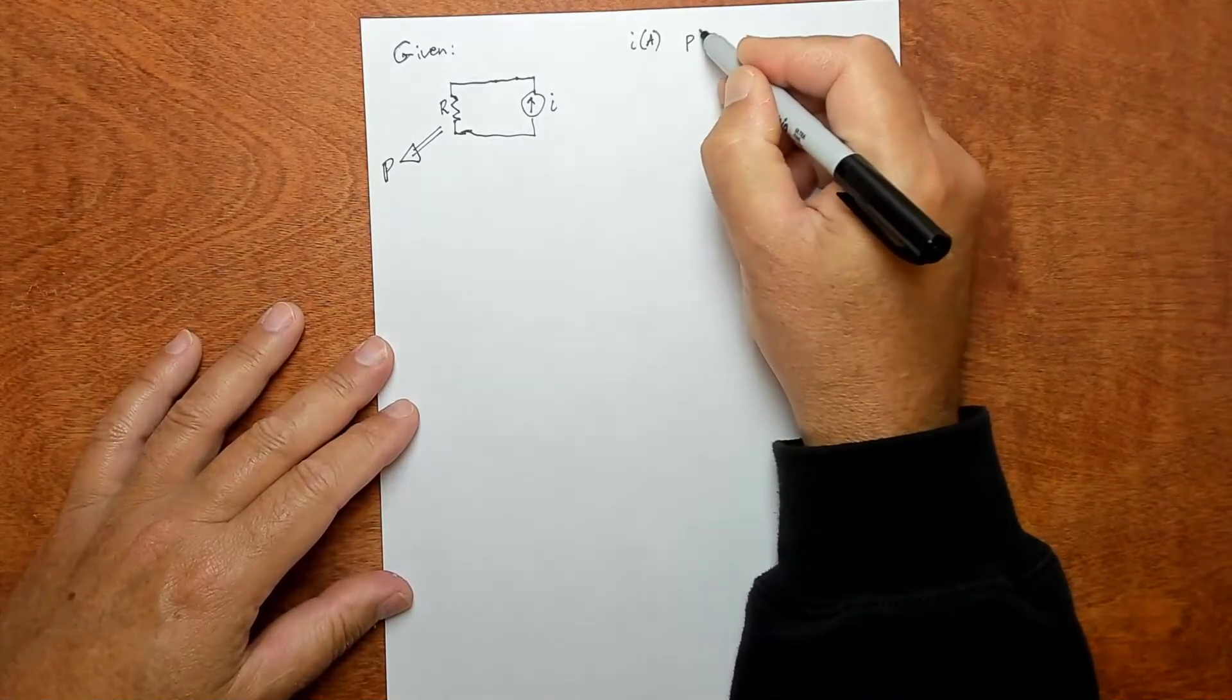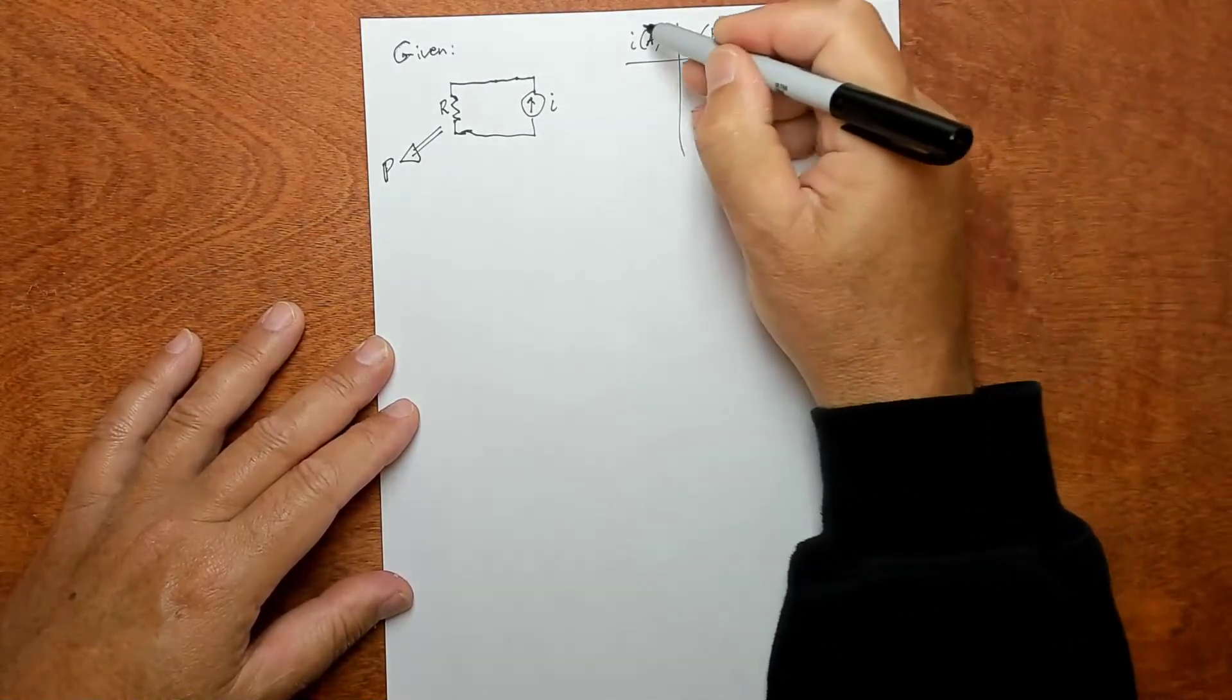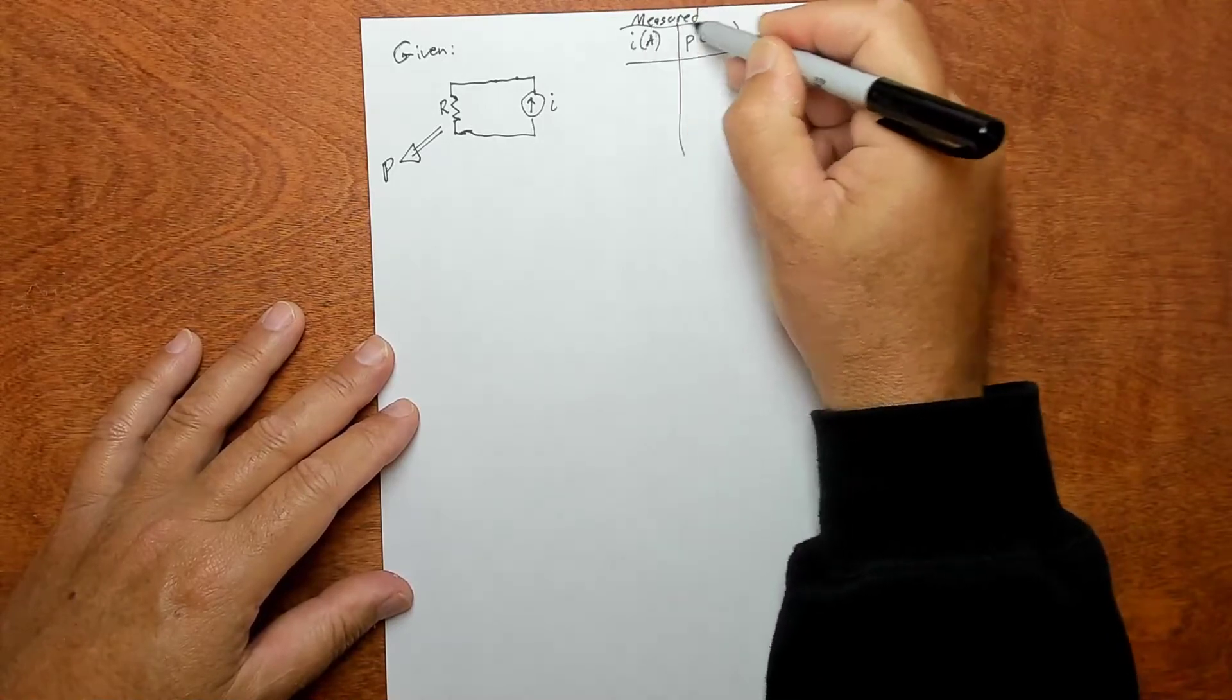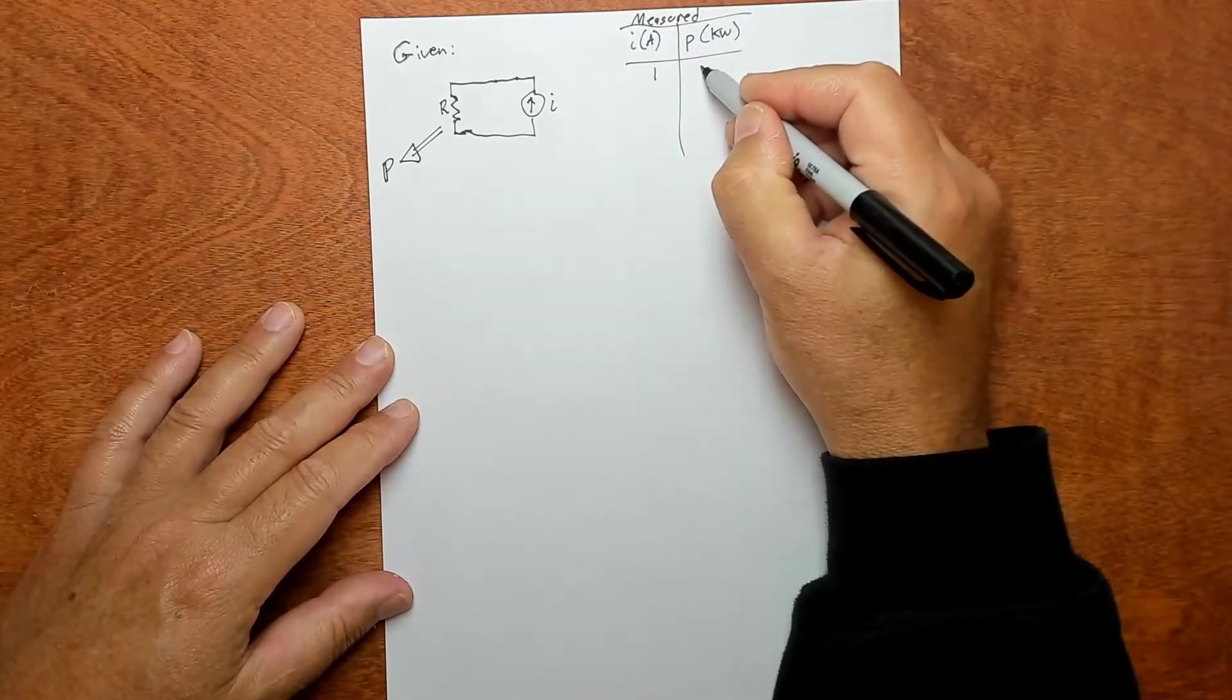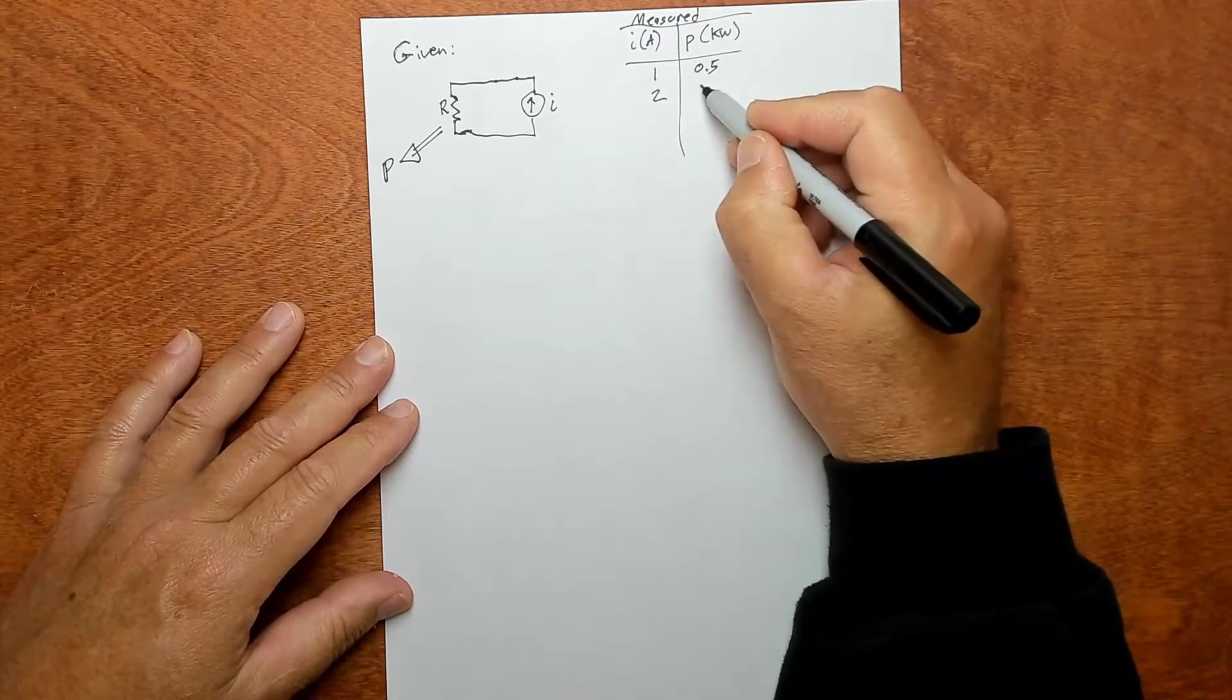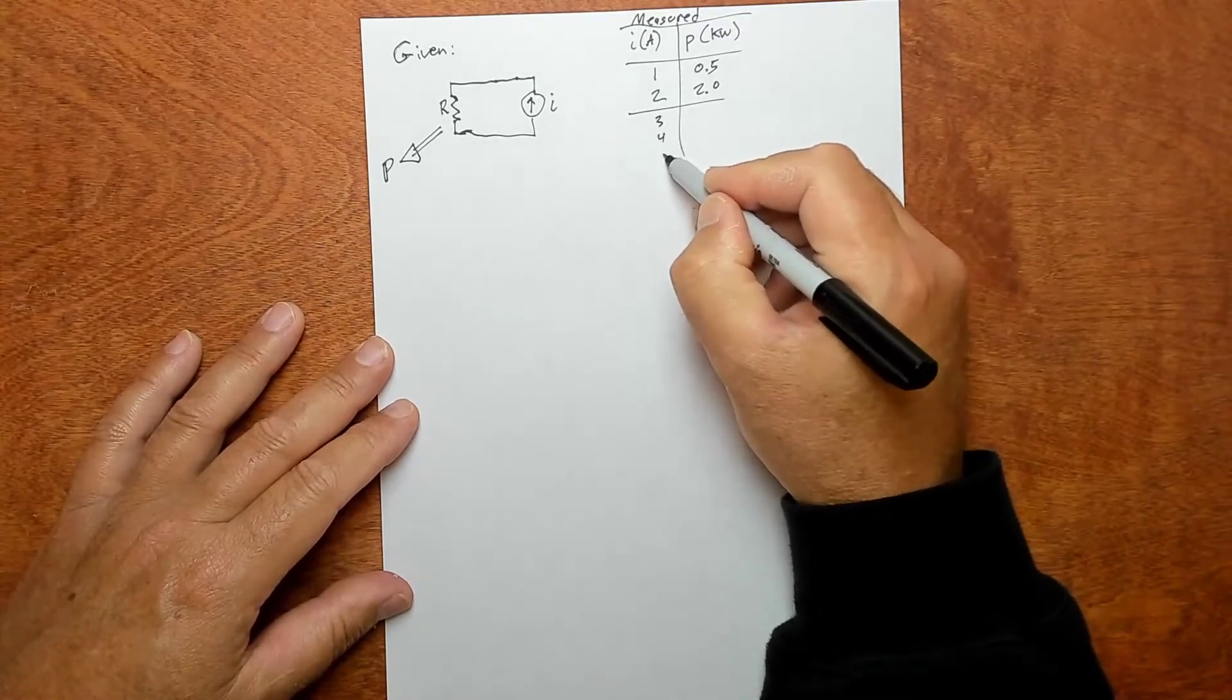So current in amps and power in kilowatts, you're also given this table of measurements. These are measured somehow with a power meter and a current meter. You got one amp, and at that point the thing was putting out a half a kilowatt.